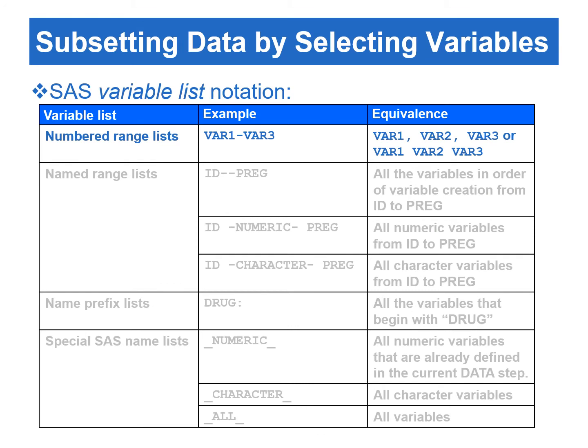SAS provides a convenient method for referring to a list of variables by using the SAS variable list notation. Variable list notation can be used in many SAS statements and data set options. There are four types of variable lists, including numbered range lists, name range lists, name prefix lists, and special SAS name lists. The variables referenced in numbered range lists must have the same name except for the last one or more characters, which need to be consecutive numbers. We use a single dash to connect the beginning and ending variables. For example, writing var1-var3 is equivalent to writing var1, var2, var3.